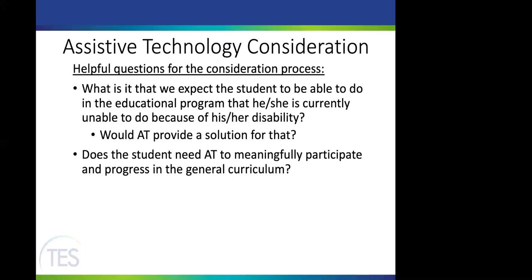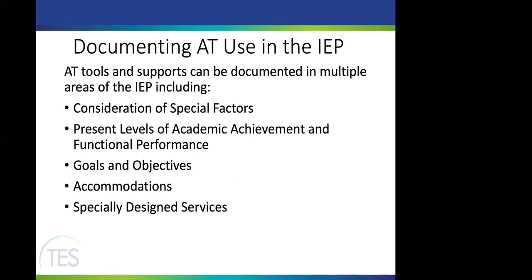Helpful questions in deciding whether a student needs AT include: What are we expecting the student to do in their educational program that they currently can't do? Would assistive technology provide a solution? And does the student need this to meaningfully participate in the general education curriculum? Once decided, AT needs to be documented in the IEP in multiple places depending on the student's needs, including the area of consideration of special factors.